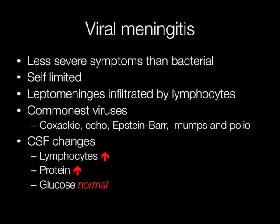In viral meningitis, the symptoms are less severe than in bacterial meningitis. The condition is self-limited and histologically the leptomeninges are infiltrated by lymphocytes. The commonest viruses involved are Coxsackie, Echo, Epstein-Barr, mumps, and poliovirus. CSF changes include an increased number of lymphocytes, increased protein, and glucose is normal.